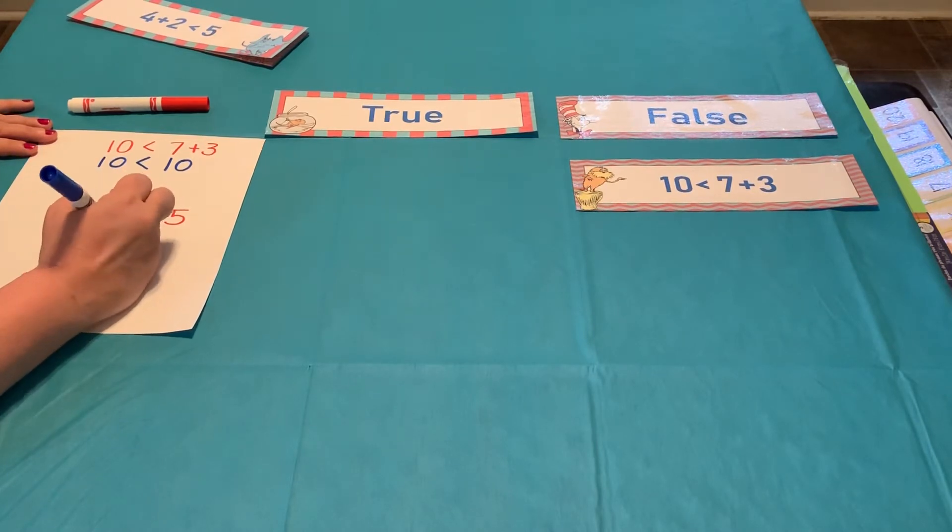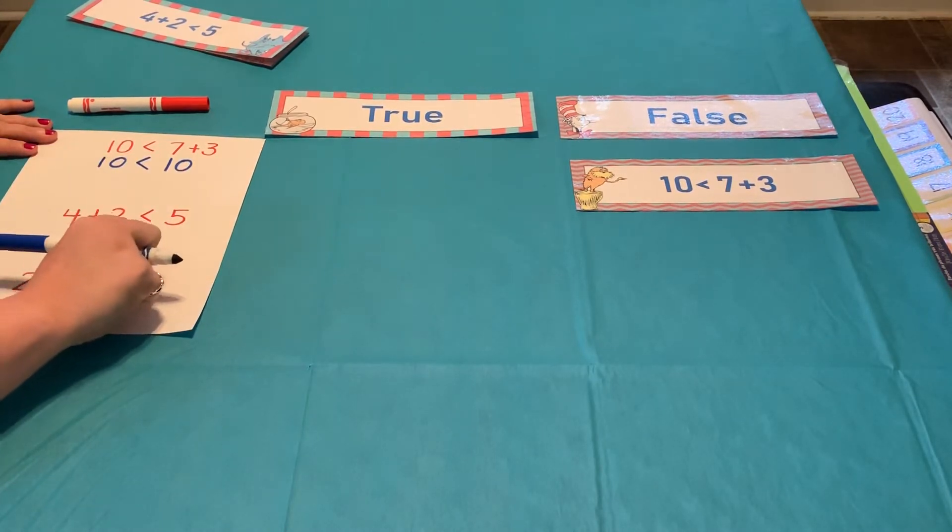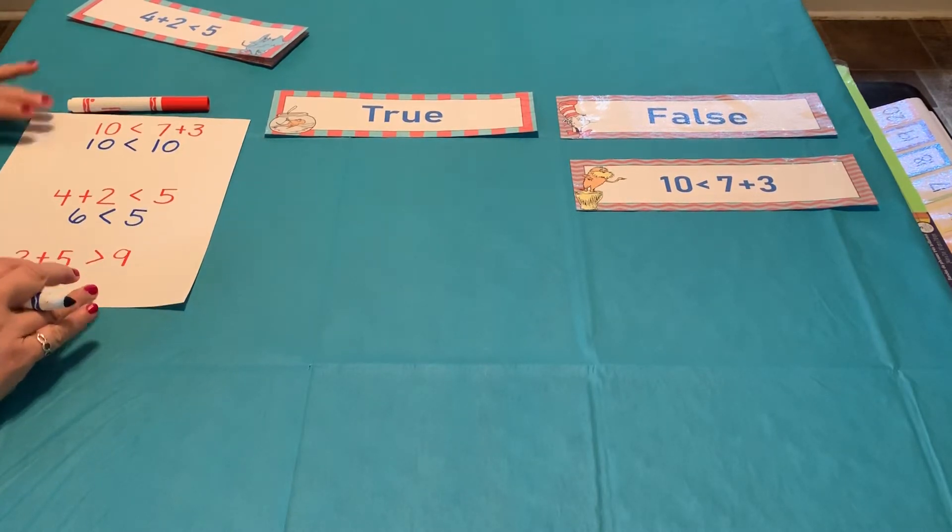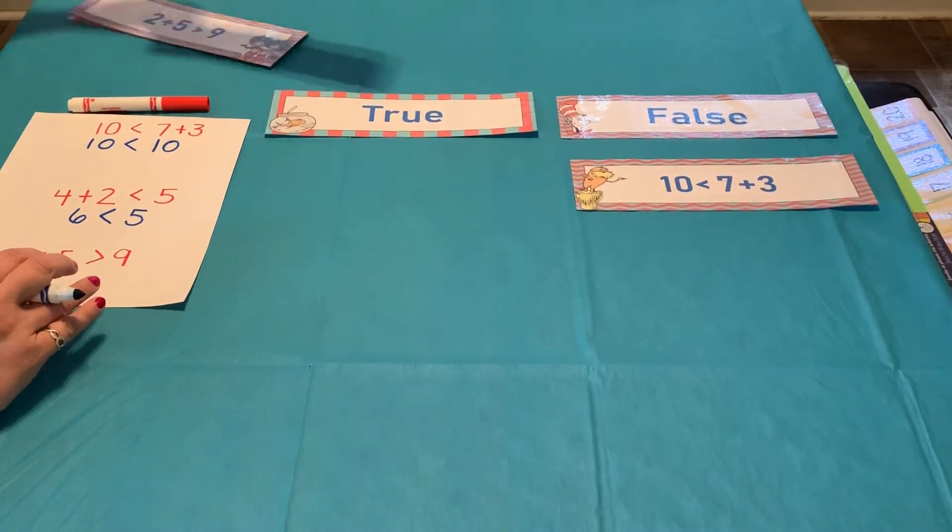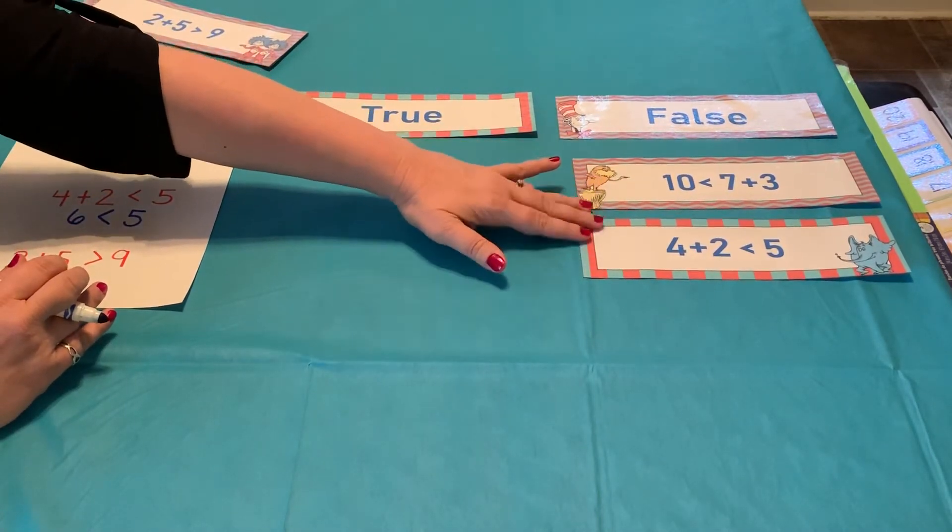So, it's 6 is less than 5. Now, we know that that alligator always wants to eat the bigger number. Is 5 the bigger number? No. So, that statement is also false. Let's put that in our false category.